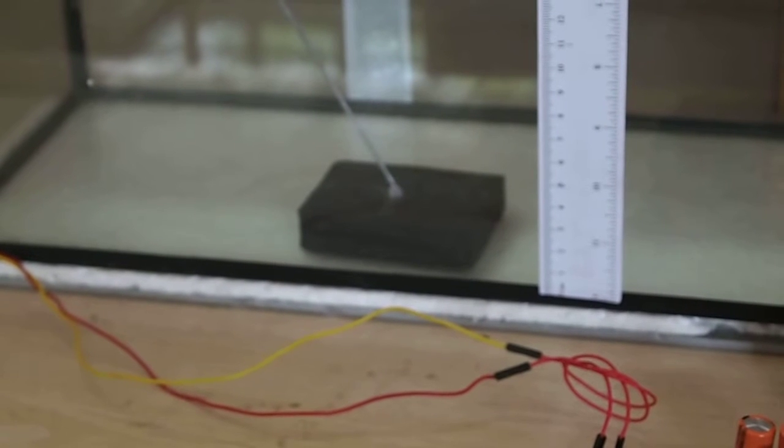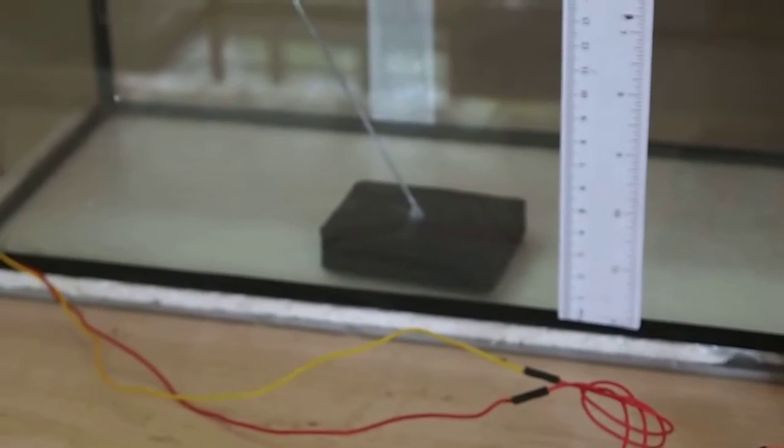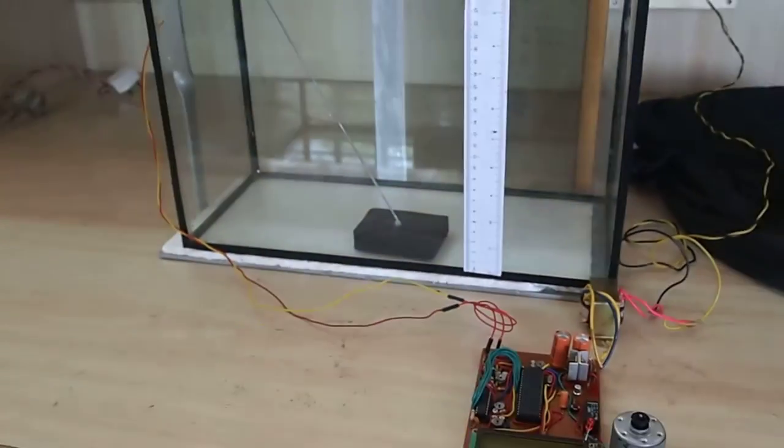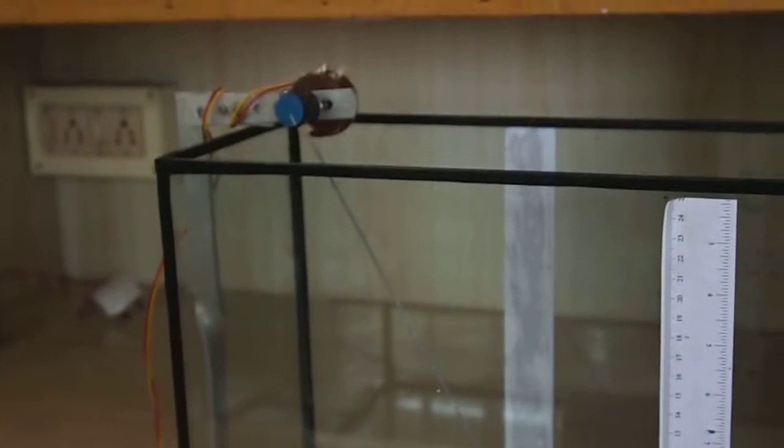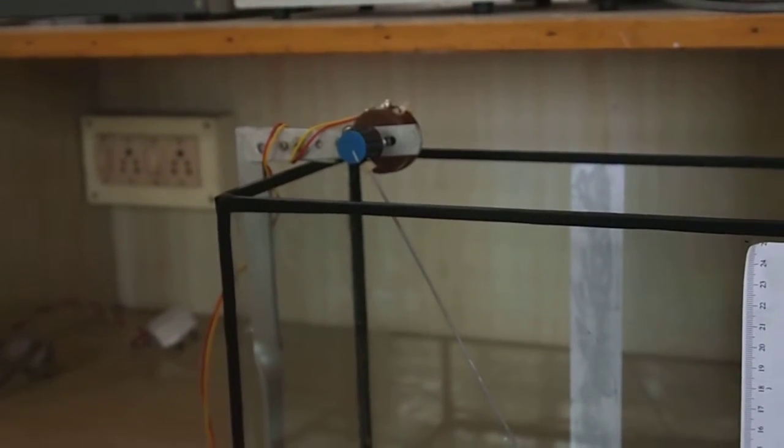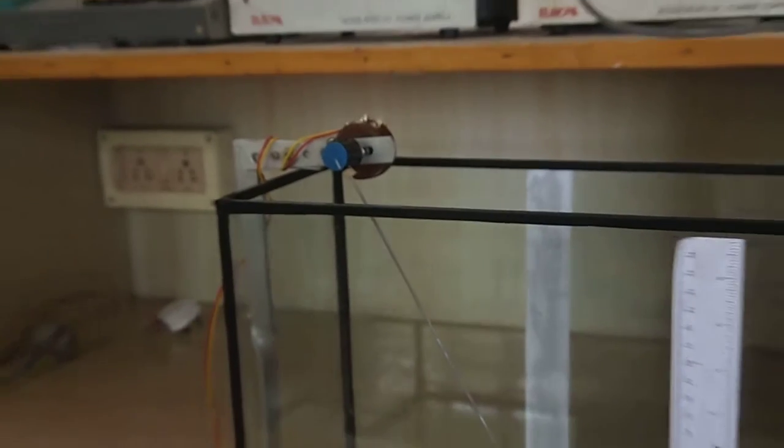When water is poured into it, the float will rise simultaneously. The shaft is connected with a thin metal rope to the potentiometer. This is going to be connected to the bridge circuit.